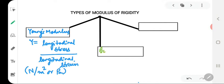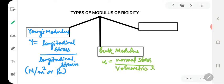It is called bulk modulus of rigidity. It is given by k and it is equal to normal stress divided by volumetric strain. So we can write down this to be equal to minus F by A divided by delta V by V.